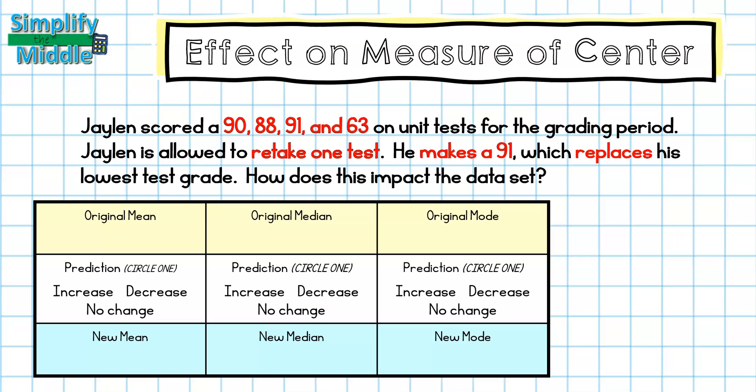On my first data set I have 90, 88, 91, and 63. On my second data set I have 90, 88, 91, and another 91, since we're replacing his lowest score. Let's go ahead and find the mean, median, and mode.